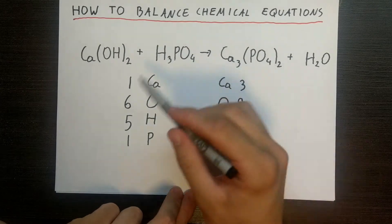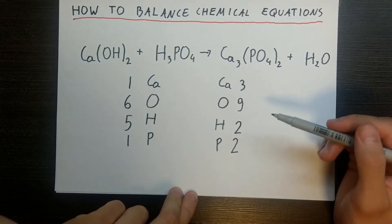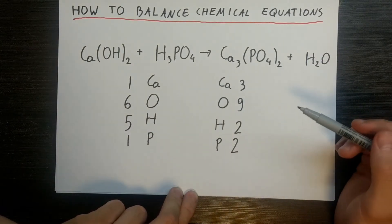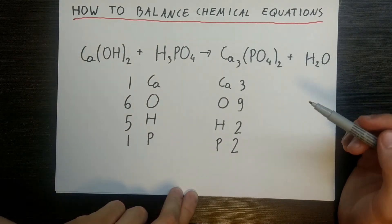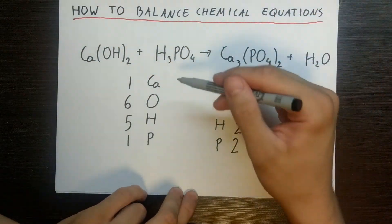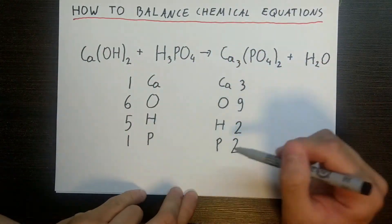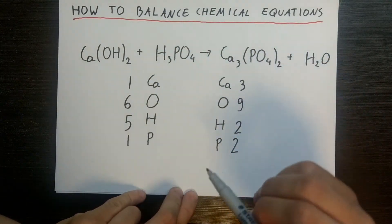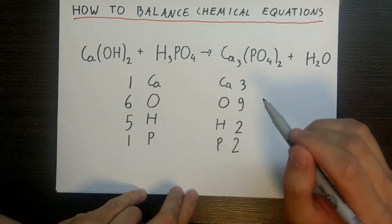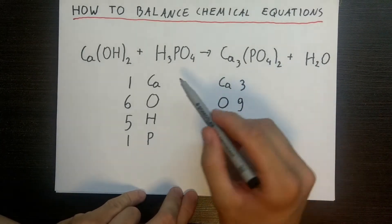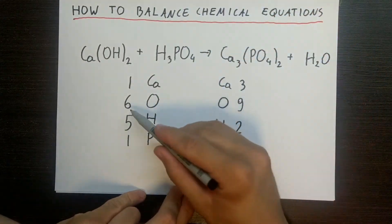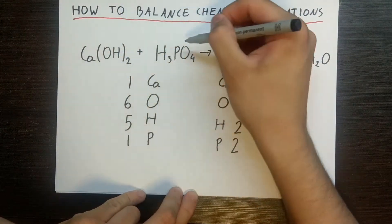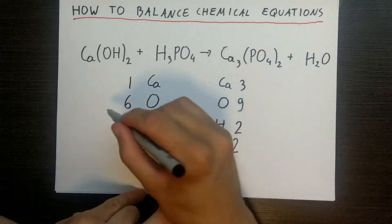So now we have a stock of all the atoms involved and we need to start balancing. But where on earth do we even begin? We have so many atoms and numbers. The way I approach this is by looking at what can be fixed in only one way. For example, oxygen has six on one side and nine on the other, but we have two places where we can increase oxygen — so that would not be a good starting point.